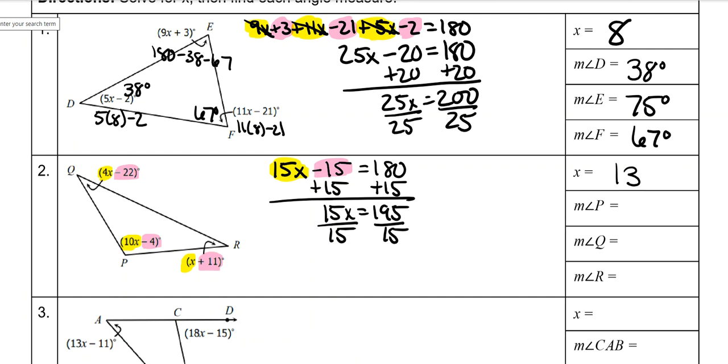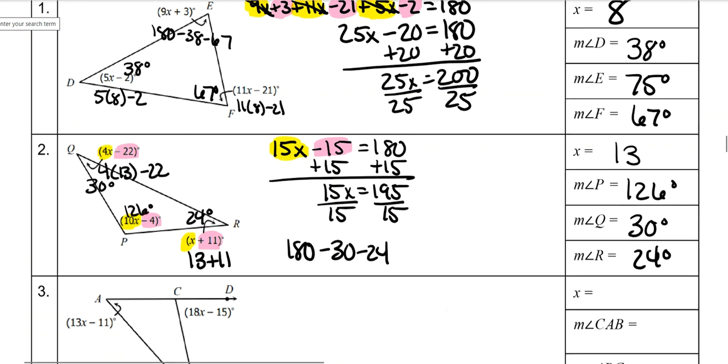And you get 13 for x. And again, we need to plug them in and figure out what all the angle measures are. So for r, that's 13 plus 11, which is 24. And then 4 times 13 minus 22. Again, put it in a calculator and you'll see that it's 30. And then do 180 minus 30 minus 24 for the other one, which is 126.